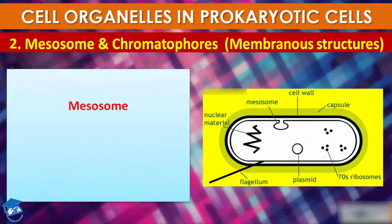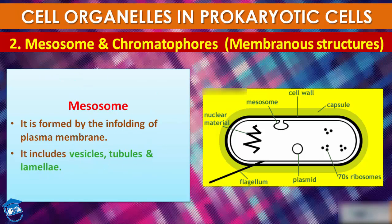Now comes mesosome. Mesosome is a special membranous structure formed by the extension of the plasma membrane into the cell. When the plasma membrane gets infolded, it forms mesosome. These extensions are in the form of vesicles, tubules, or lamellae — three types of mesosome.